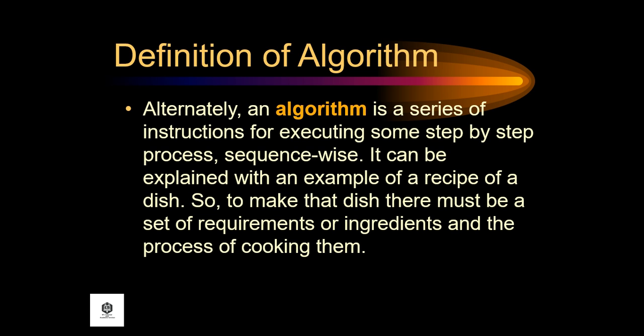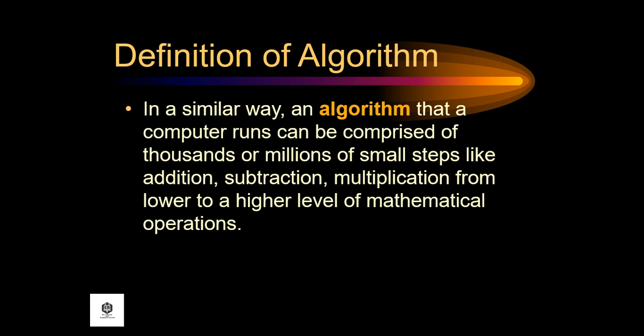It can be explained with an example of a recipe of a dish. To make that dish, there must be a set of requirements or ingredients in the process of cooking them. In a similar way, an algorithm that a computer runs can be comprised of thousands or millions of small steps like addition, subtraction, multiplication, from lower to higher level of mathematical operations.